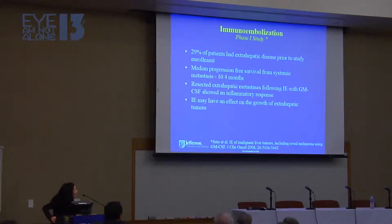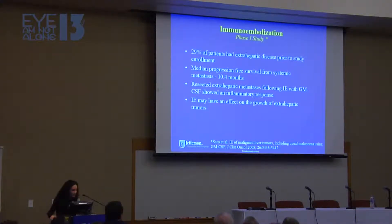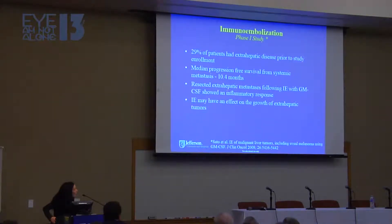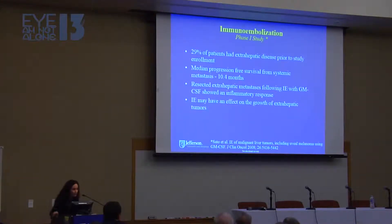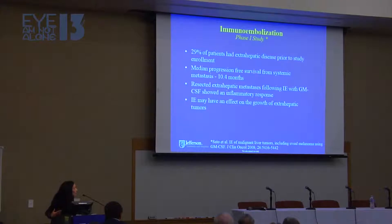In our Phase I trial, about 30% of patients had tumors outside the liver — lungs, subcutaneous metastases. After immunoembolization, the median progression-free survival from when the systemic metastases started growing was about 10.4 months. In some patients, we actually resected these tumors outside the liver and found an inflammatory response, so we concluded that immunoembolization may have an effect on the growth of extrahepatic tumors.